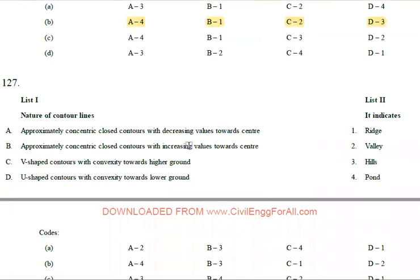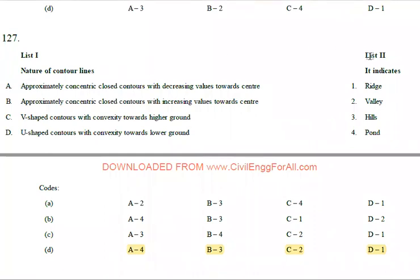Contour lines indicating a hill show concentric contours with values increasing towards the center. A V-shaped contour with convexity towards the higher ground indicates a valley. A U-shaped contour with convexity towards the lower ground indicates a ridge.